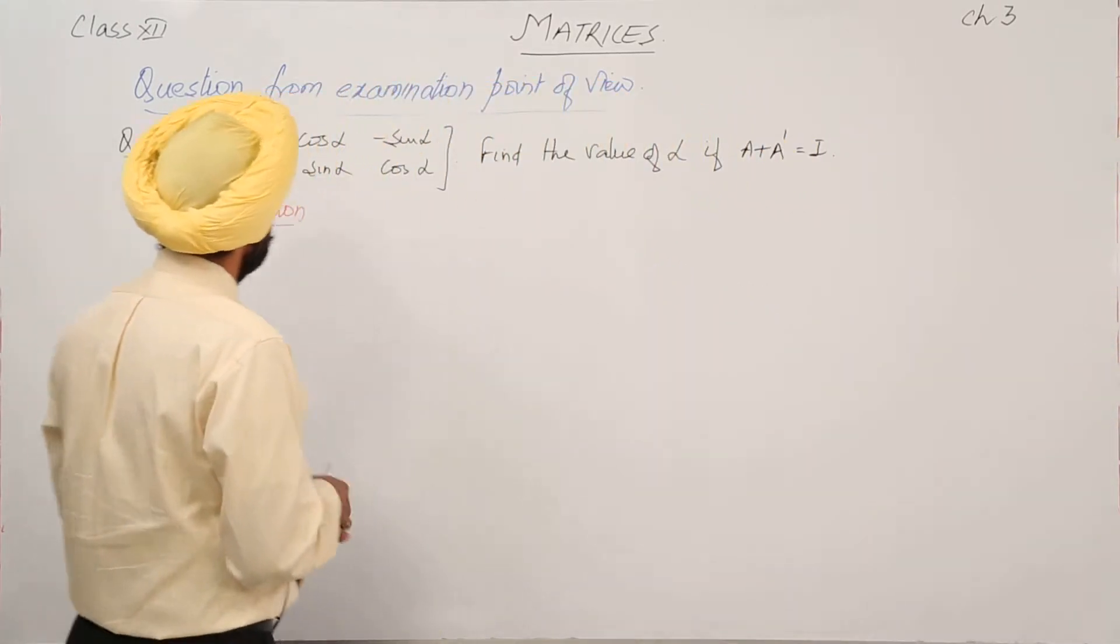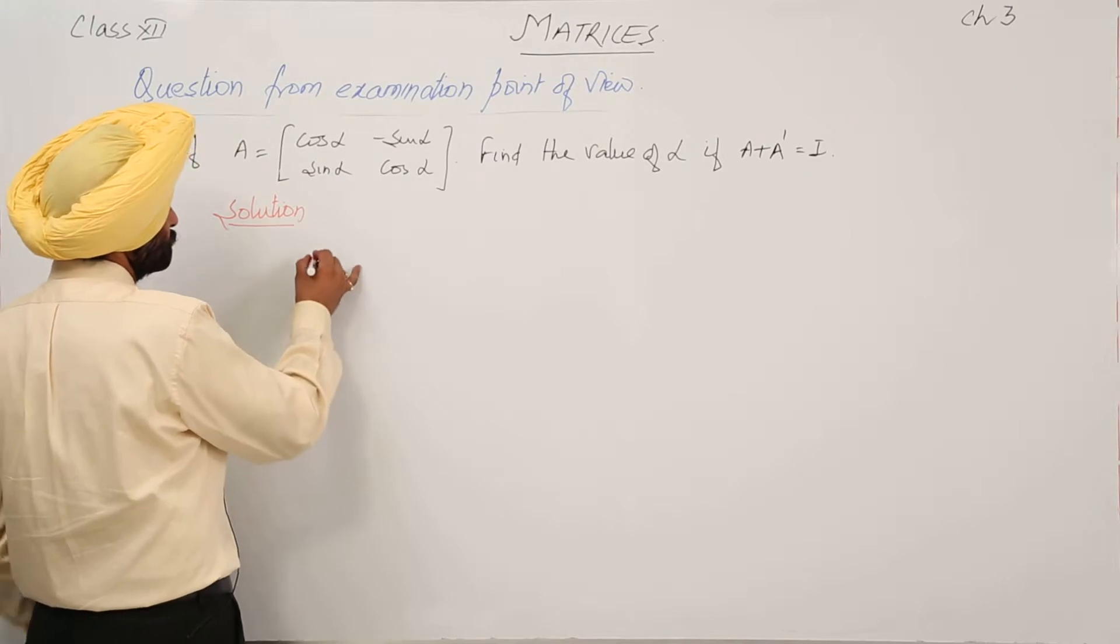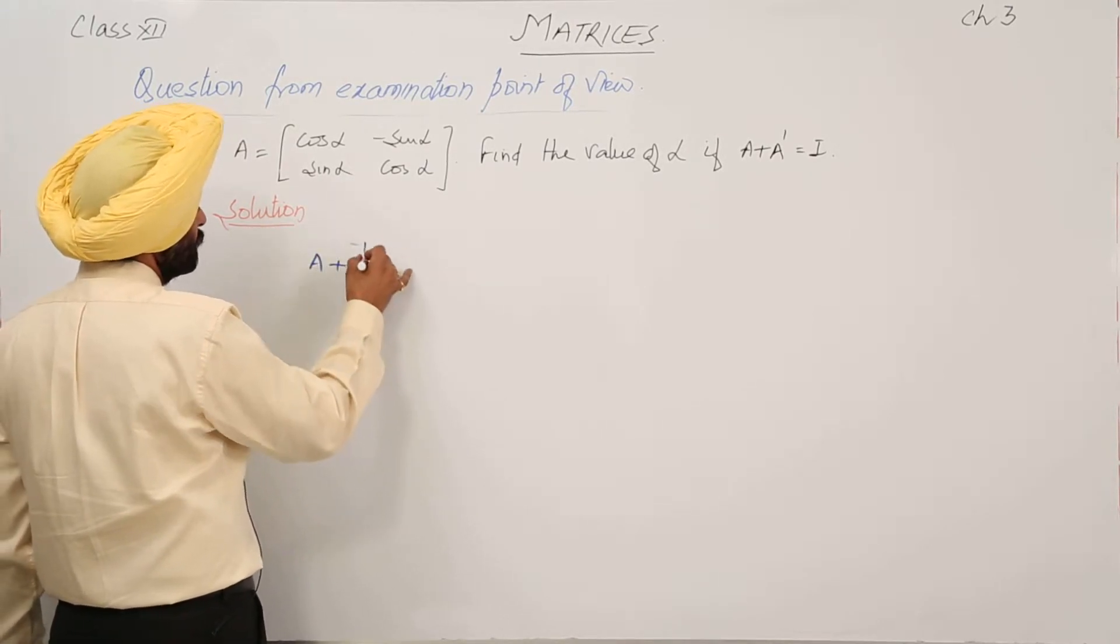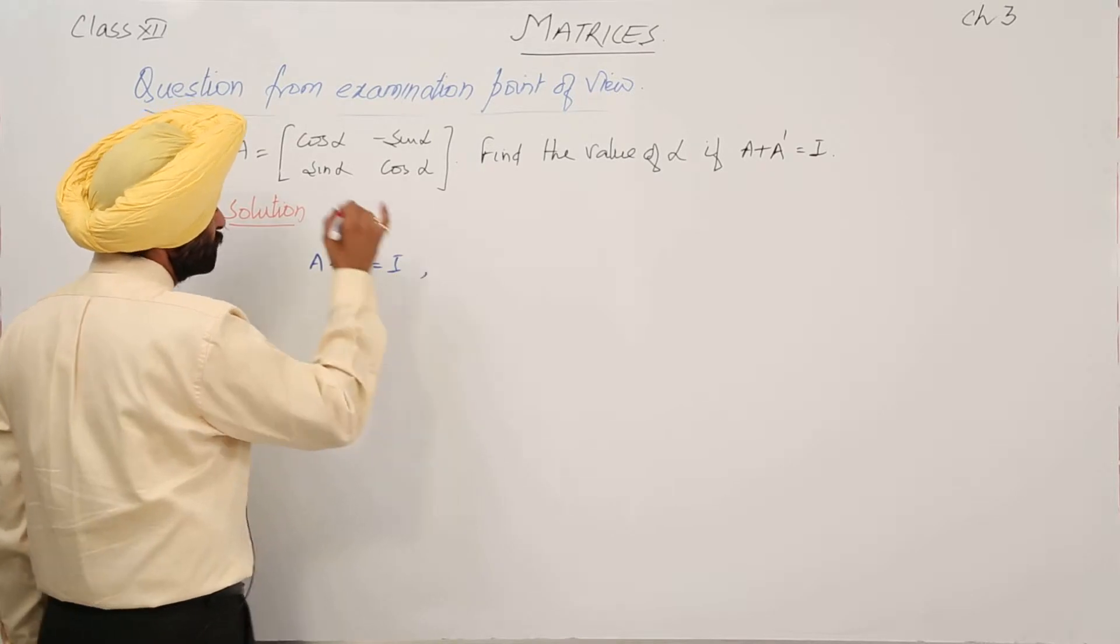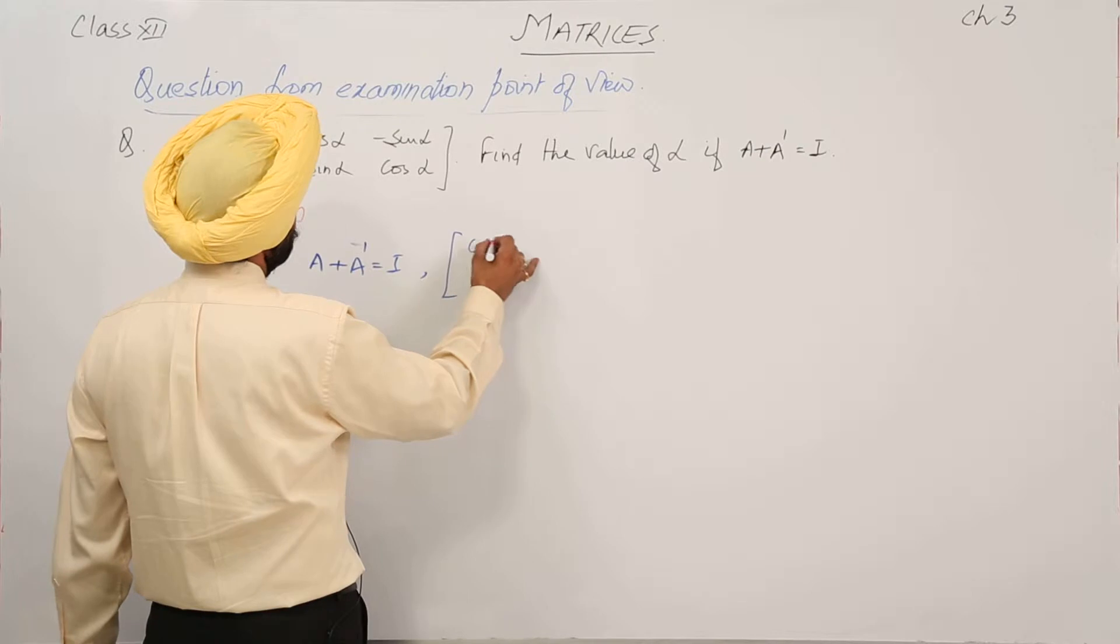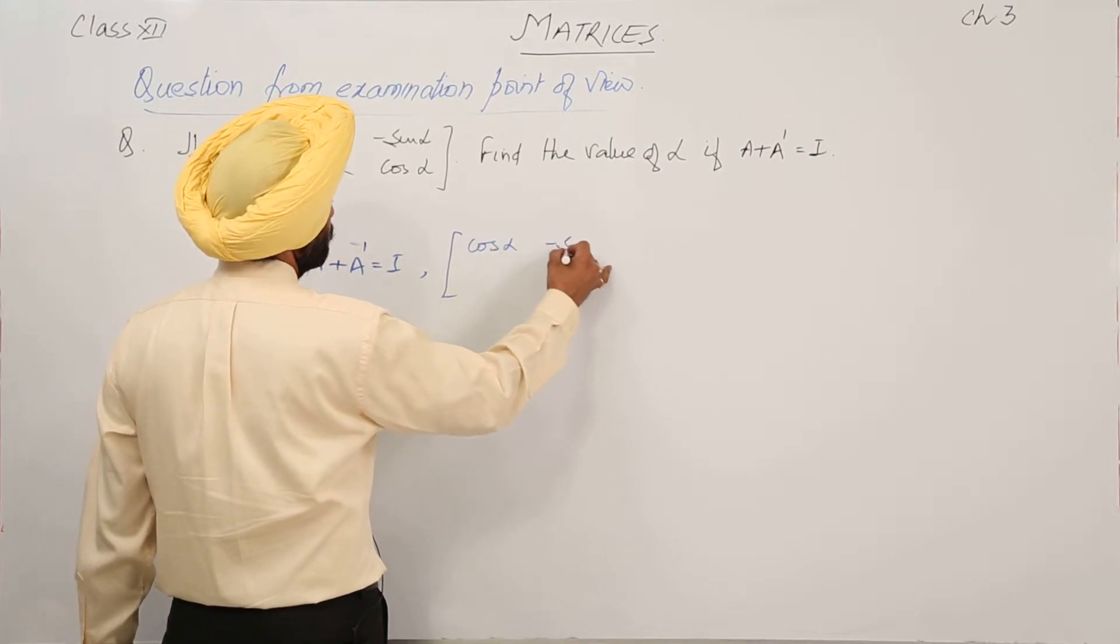So A plus A transpose is equal to the identity matrix. What we can write now: cos alpha, minus sin alpha,